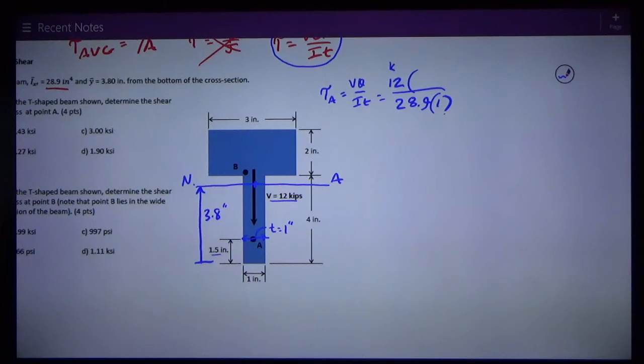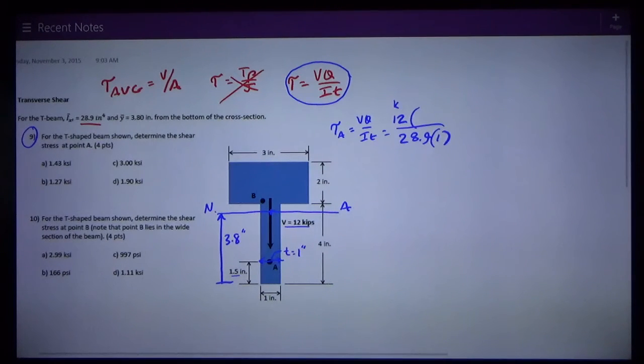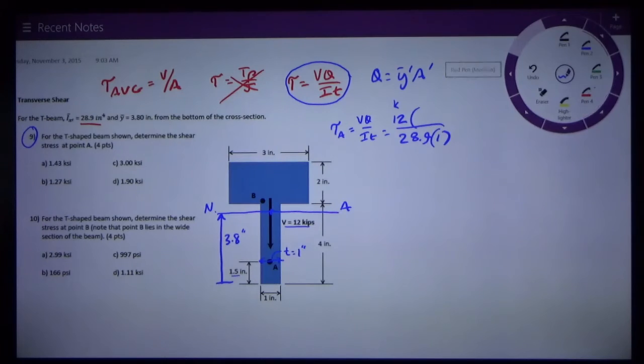Now, the only hard part about this is Q. It's not really that hard. Q is given to us on the equation sheet. Q is Y bar prime A prime. A prime is the area of the cross section away from the neutral axis at the point where we're calculating the shear stress.